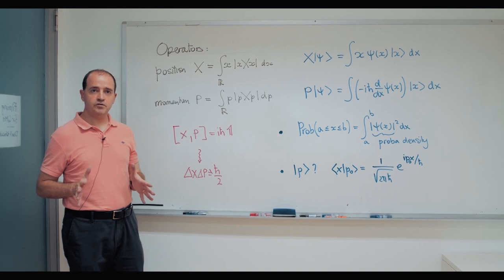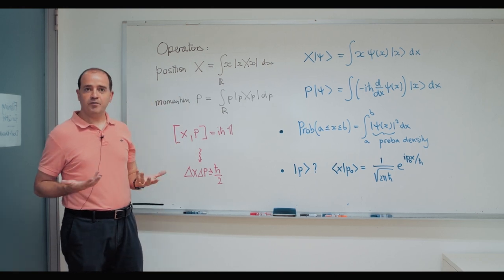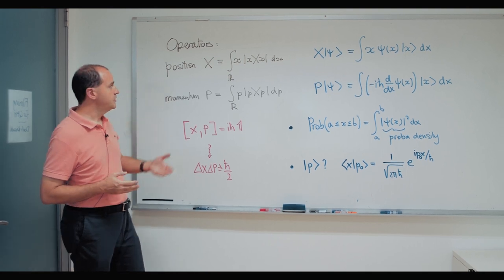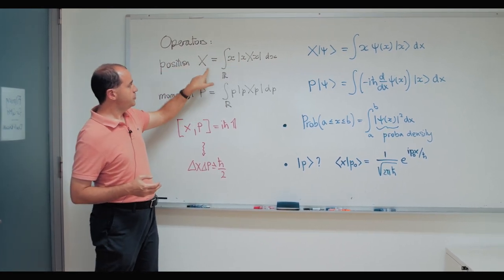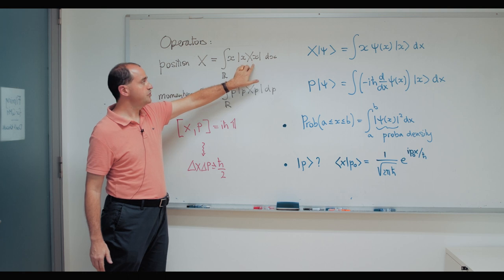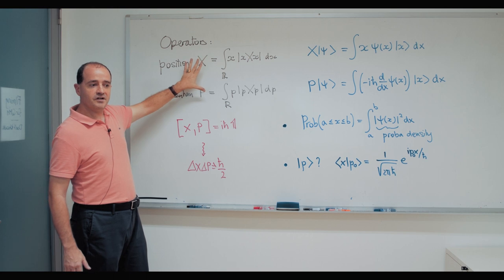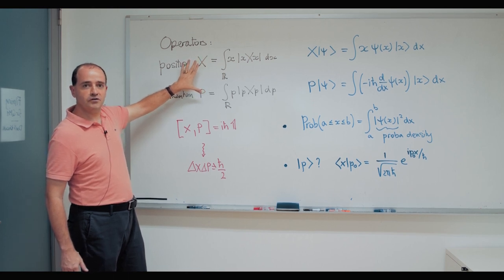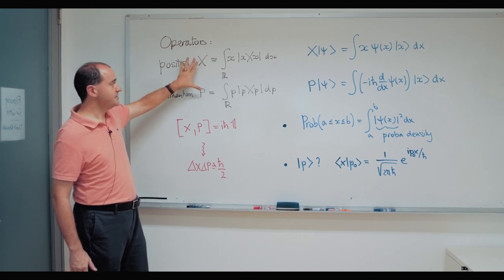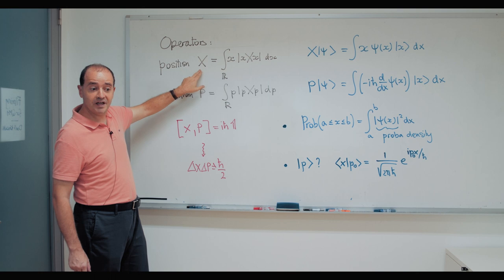After speaking about the description of the states, we have to describe the operators that describe the physical quantities. For the material point, there are two main operators — position and momentum — and all the others depend on those two. They can be written in an integral form involving projectors over position states. As long as I write these two like this, there's no difference, so I have to specify a relation between them so that this is the momentum conjugated to that position.